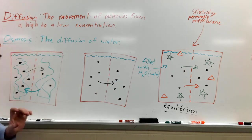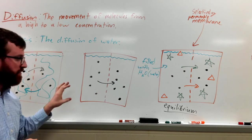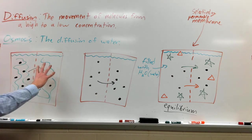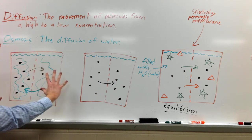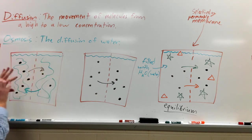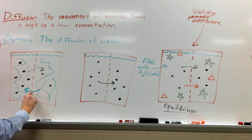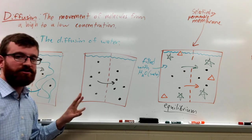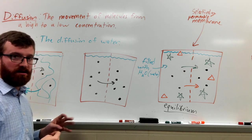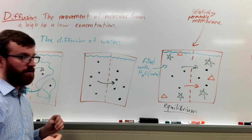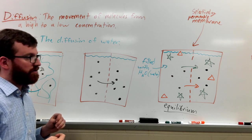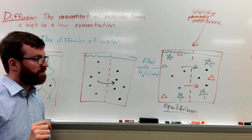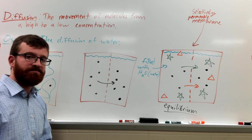Osmosis — there was only one example of osmosis given here, and that was where the water moved from the high concentration on the right side to the left side. That arrow is the only arrow representing the movement of water molecules. It's important to be able to distinguish the difference between diffusion and osmosis. I hope this helps.